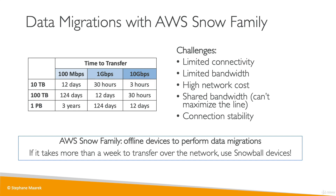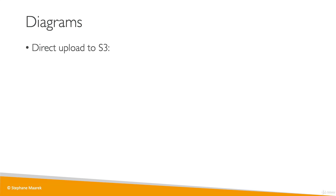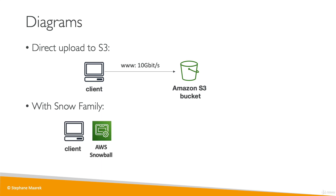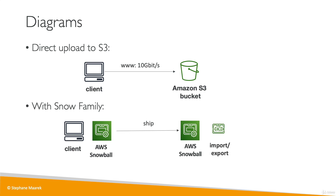The Snow Family are offline devices that allow you to perform data migrations. AWS will send you an actual physical device by post, you load your data onto it, and then send it back to AWS. The rule of thumb is that if it takes more than a week to transfer data over the network, you should use a Snowball device. With the Snow Family, the client requests a Snowball device, receives it via post, loads data directly onto the device locally, ships it back to an AWS facility, and the data is then imported or exported to an Amazon S3 bucket. It's a way to transfer data to AWS through the physical route, not the network route.